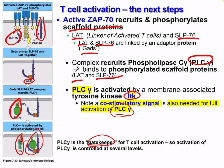PLC-gamma is the gatekeeper for T cell activation. Its activation is controlled at several levels — without it we won't have activation, so it's highly controlled because we don't want it acting out of control or when we don't need it.